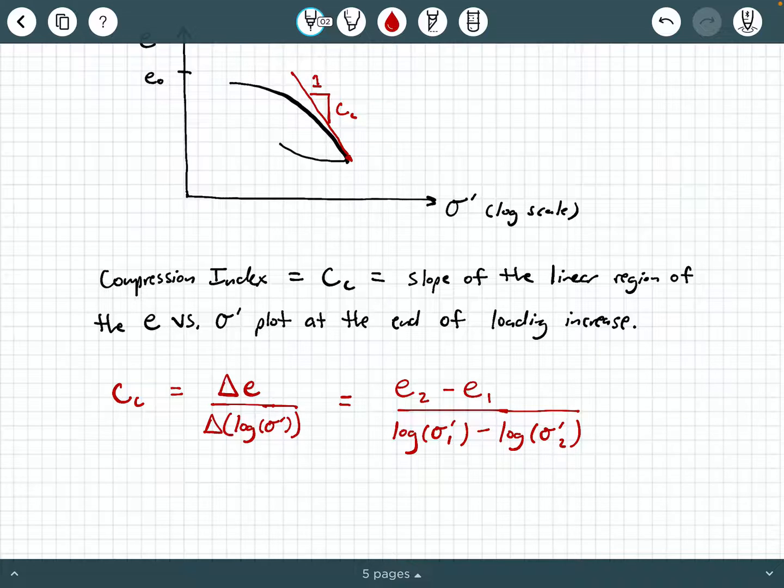Now you may be thinking to yourself, wait a second Dr. A, you're flip-flopping your subscripts here. Well, the reason why I'm doing that is when we do our actual consolidation calculations later on, we typically take C sub C as a positive value. Yes, the specimen is compressing, but if we called compression negative, then we're going to have a negative sprinkled in all of our calculations. So to make sure we have a numerically positive number for C sub C, you can just flip-flop the values associated with these subscripts, and that will factor out a negative sign.